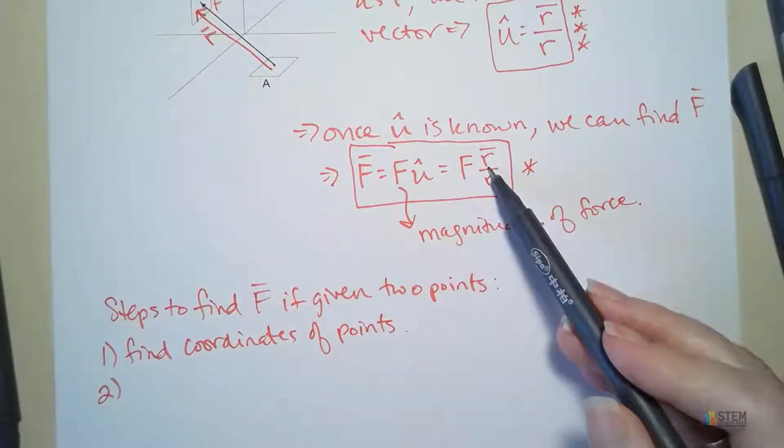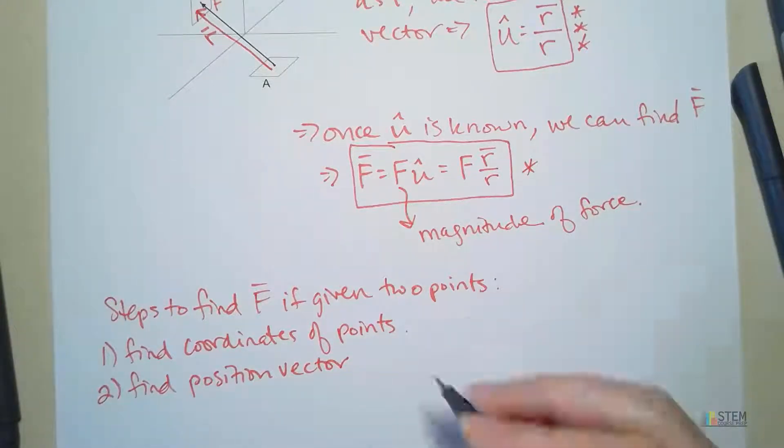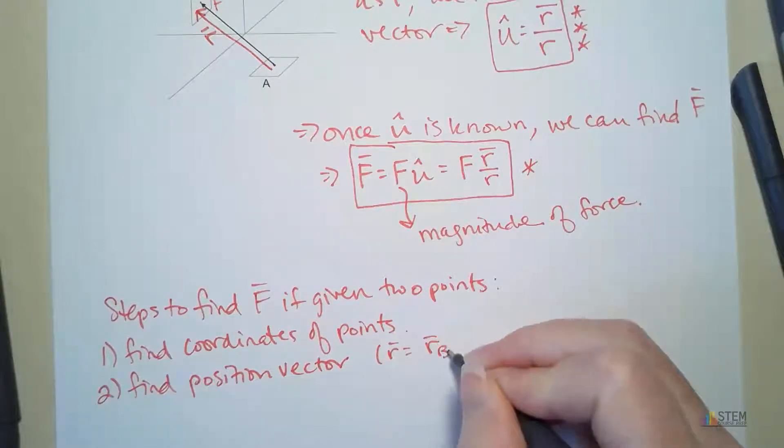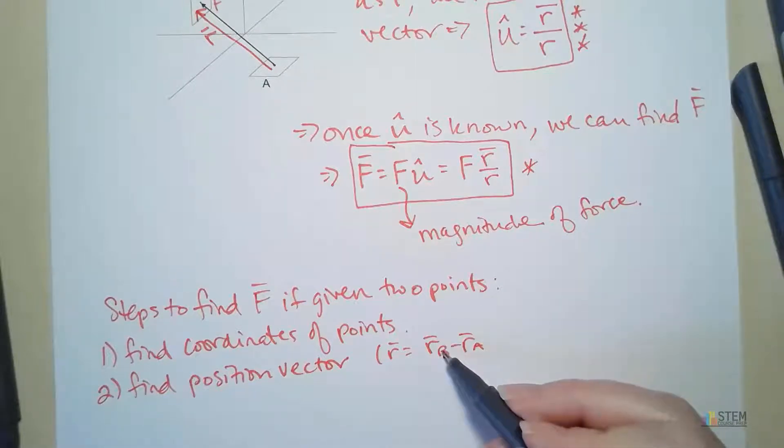After that, we're going to find the position vector. And remember with that, you just basically subtract the coordinates. So for instance, we'd have our B minus our A in this case. Remember the one that's first is the one that your vector is pointing towards.